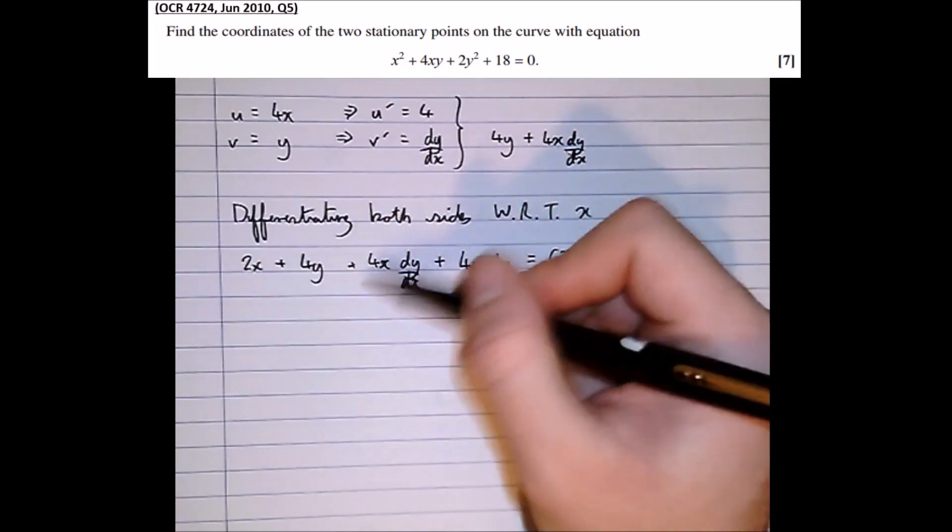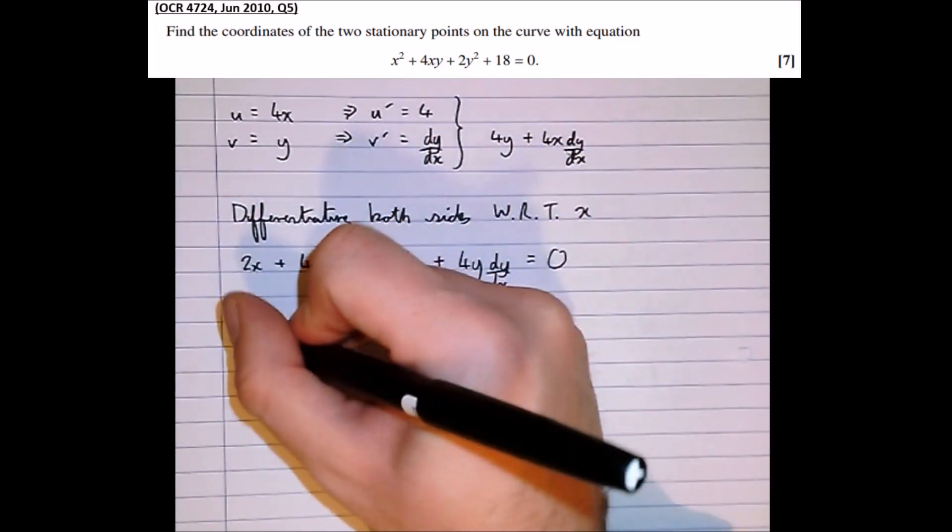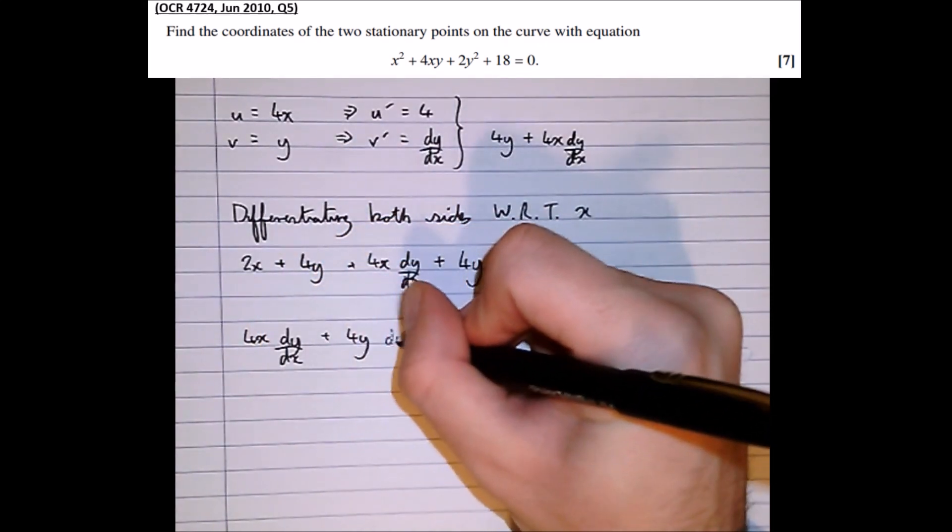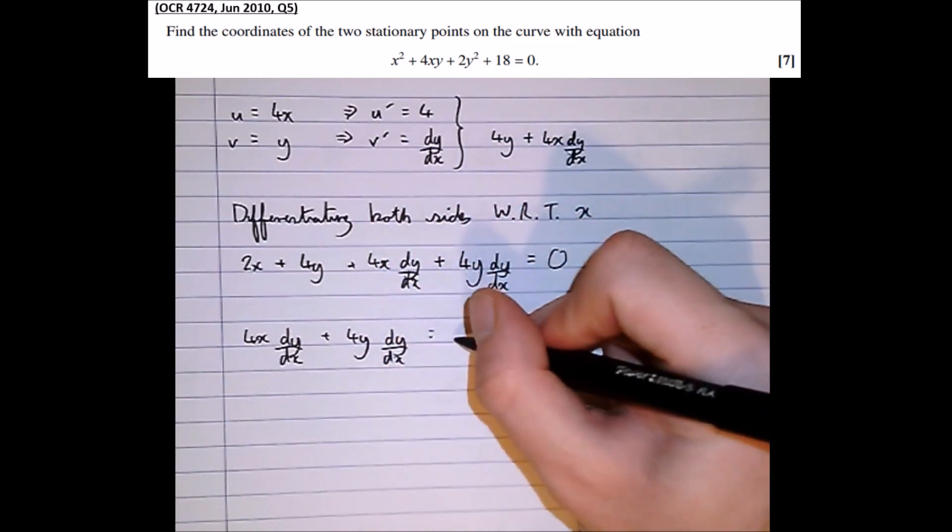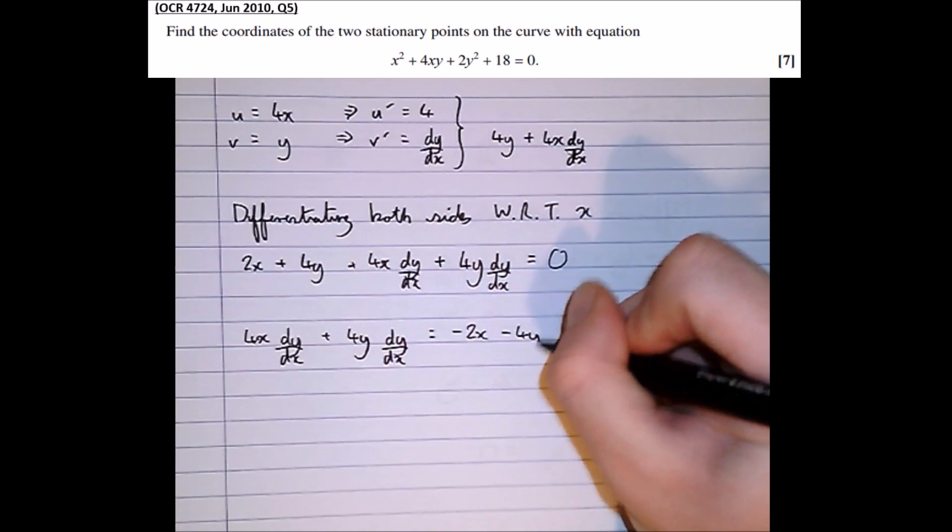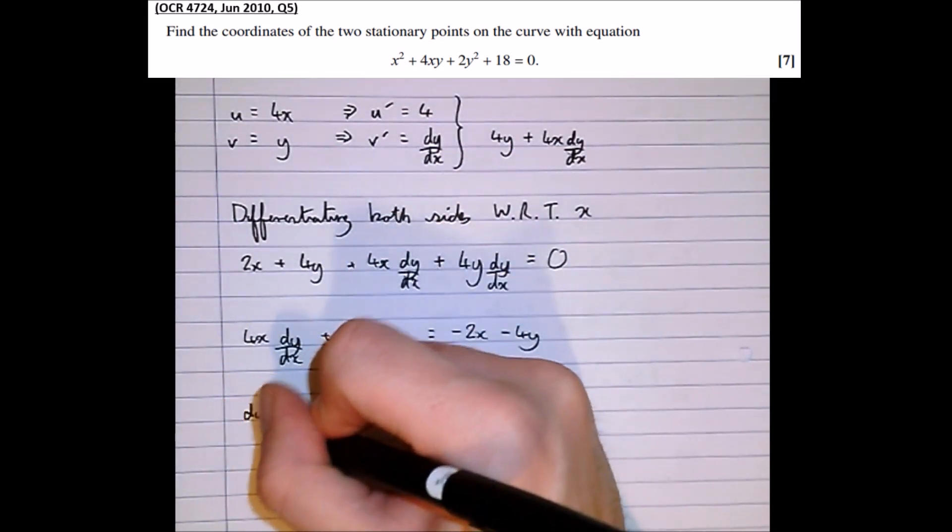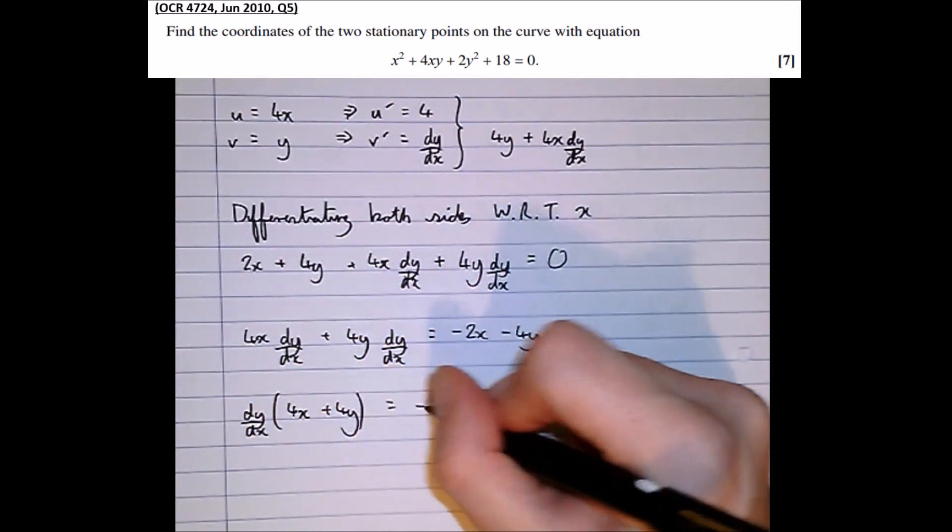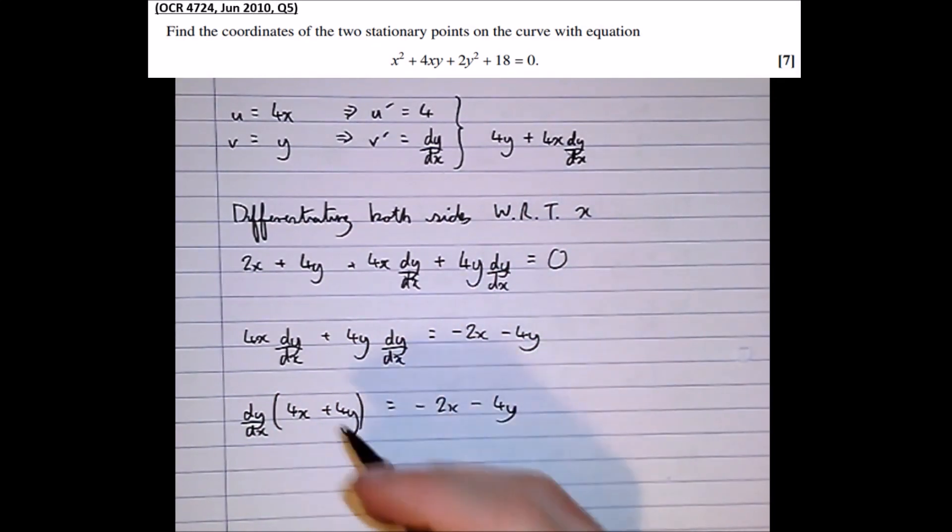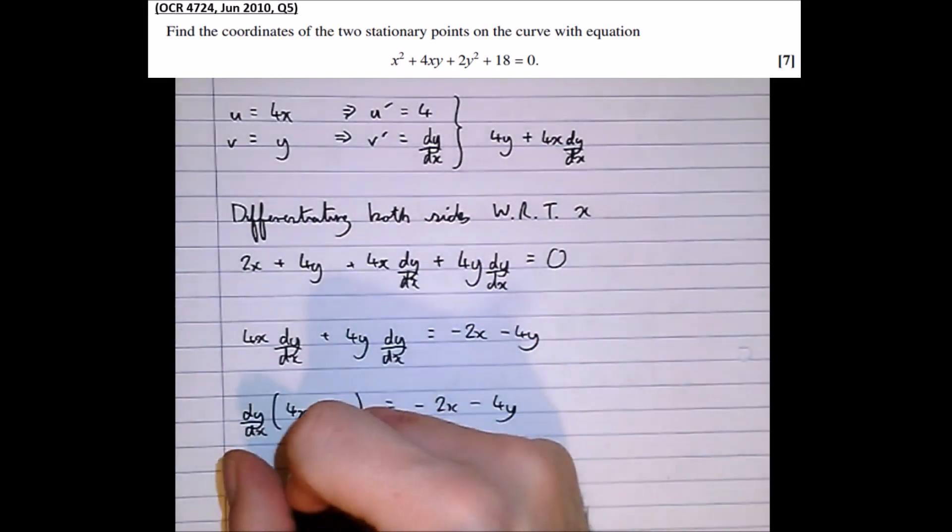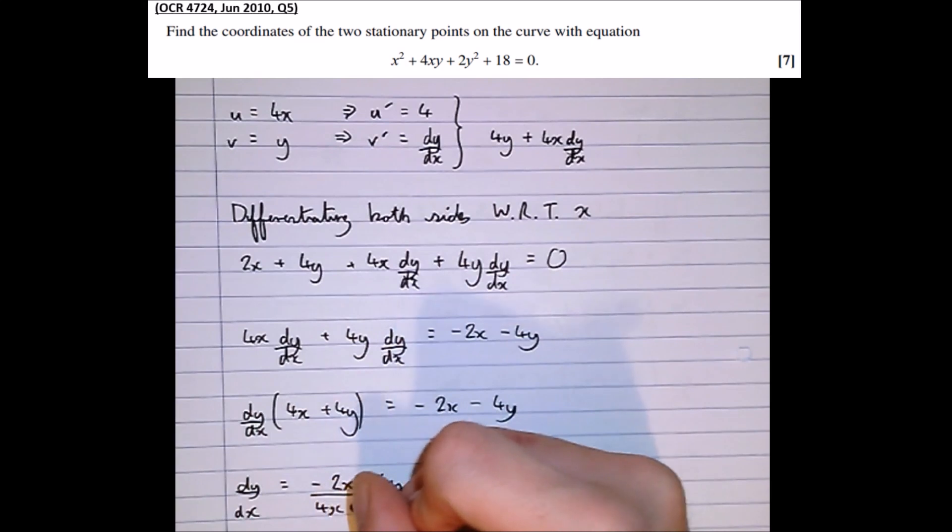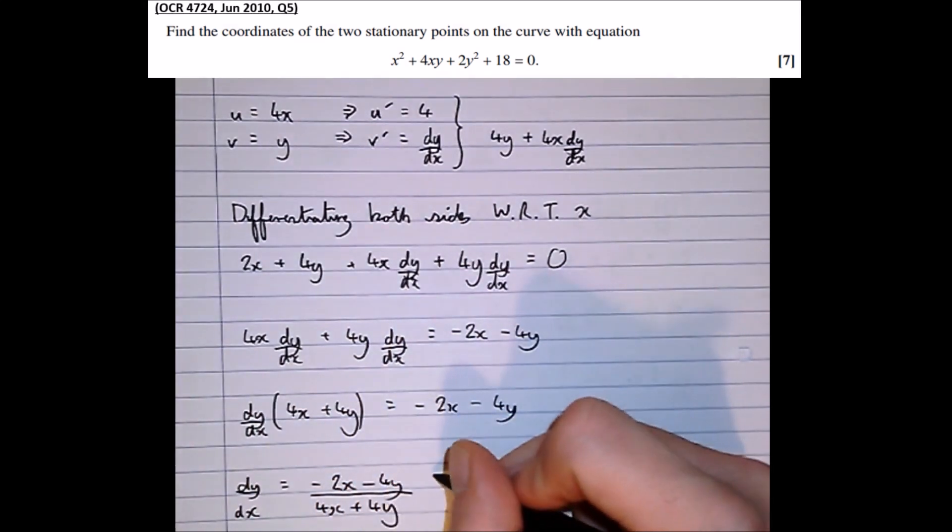Now let's take all the non-dy by dx terms to the other side. So we get 4x dy by dx plus 4y dy by dx equals minus 2x minus 4y. Factoring out the dy by dx, we get dy by dx bracket 4x plus 4y equals minus 2x minus 4y. Then dividing by 4x plus 4y, we get dy by dx equals minus 2x minus 4y over 4x plus 4y, which at a stationary point is equal to 0.